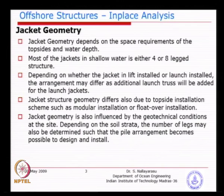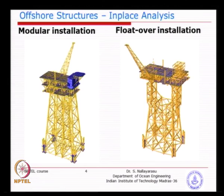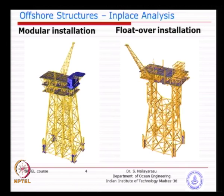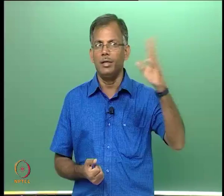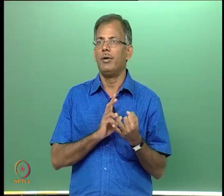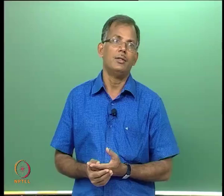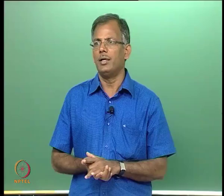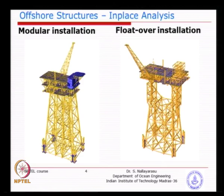The geometry of the jacket can also change depending on how the top side is installed. If the top side is installed in modular fashion — split into several sub-modules installed on top — it could look one way. But if the top sides are installed using a float-over method, the complete top side is one piece, and the jacket geometry changes completely. So there are four cases: lift-installed jacket, launch-installed jacket, lift-installed modular top sides, and float-over installed single-piece top sides. These four could manipulate the jacket into any configuration.